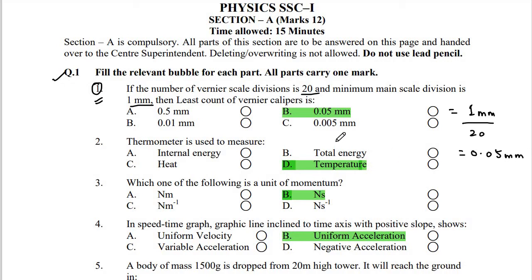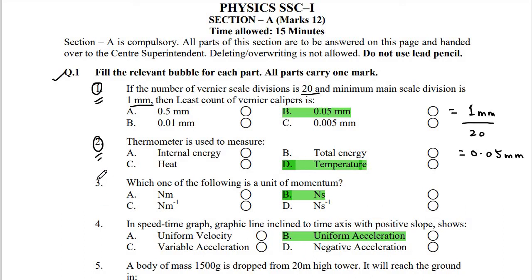Number 2: A thermometer is used to measure — and you have four options: internal energy, total energy, heat, and temperature. You know well that a thermometer is a temperature-measuring device, so option D is the right answer.